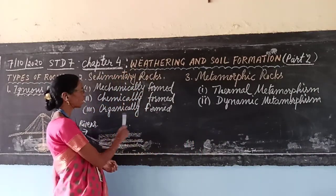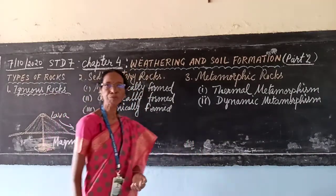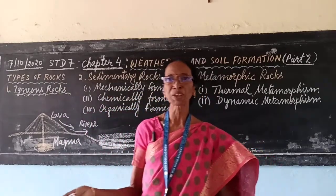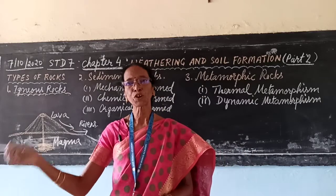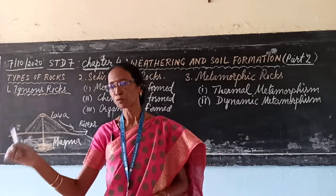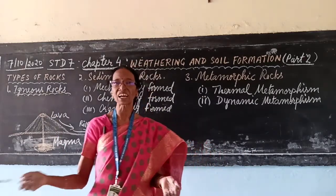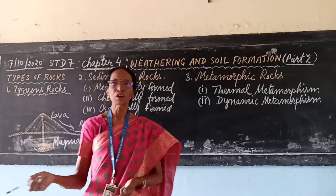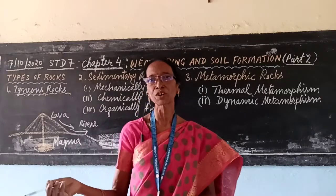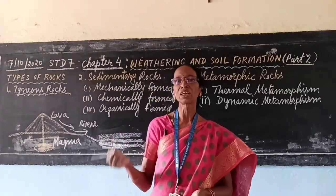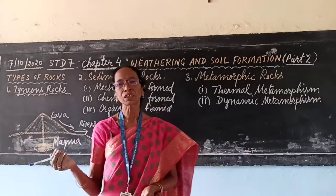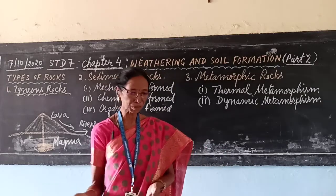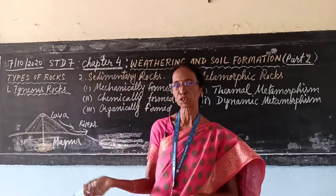Third is the organically formed sedimentary rocks. Large areas of vegetation and animals, when buried for a long period of time below the surface, are changed into coal and petroleum. So organically formed sedimentary rocks are formed due to the decomposition of plants and animals. The examples are coal and petroleum.